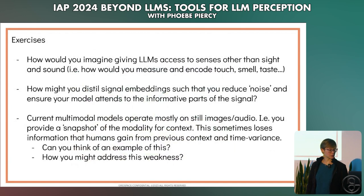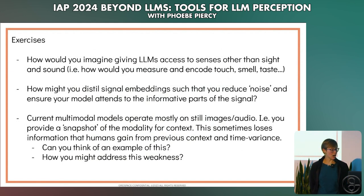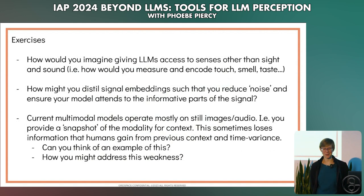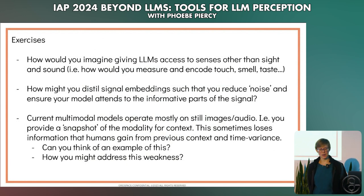These are the exercises: How would you imagine giving LLMs access to senses other than sight and sound — touch, smell, taste? Would the encodings differ and how might you augment it? How might you distill signal embeddings to reduce noise and ensure your model attends to the most informative parts of the signal? Current multimodal models operate mostly on still images and audio — a snapshot — which loses information that humans gain from previous context and time variance. Can you think of an example of this, and how might you address this weakness?